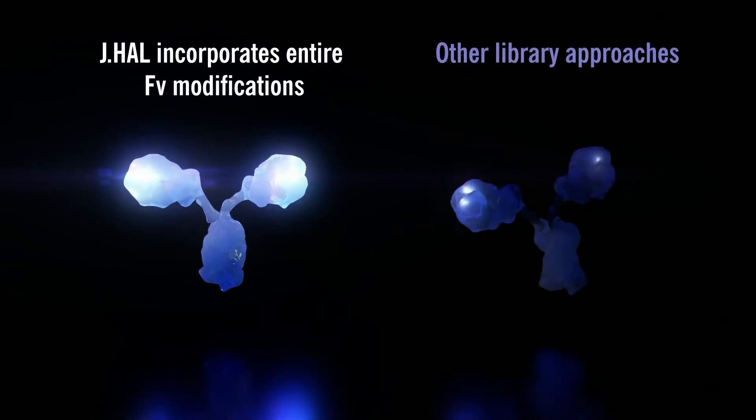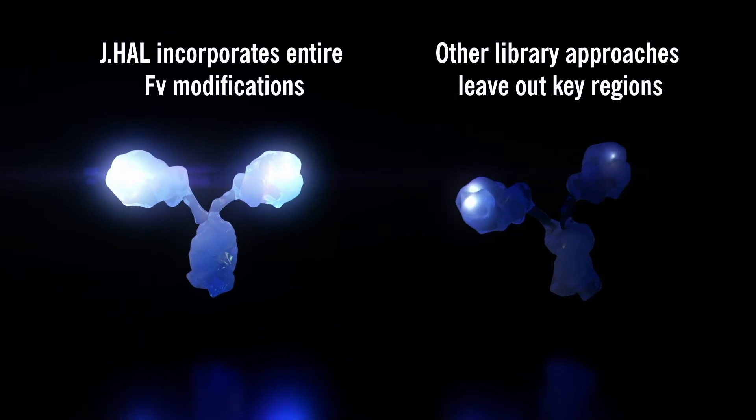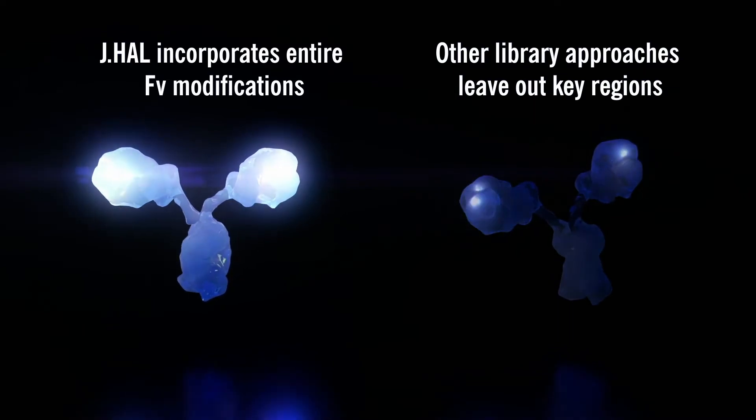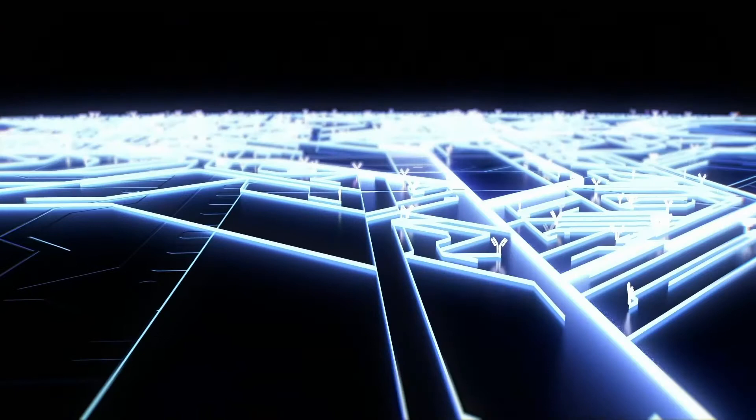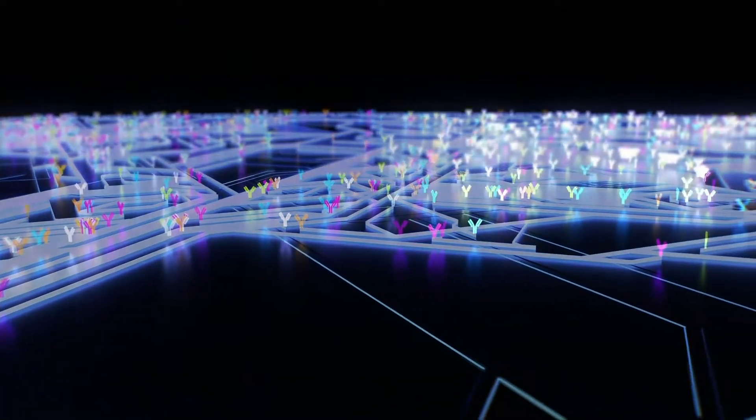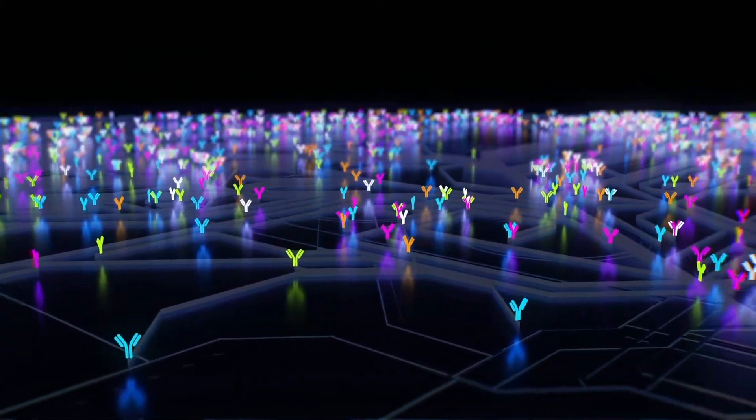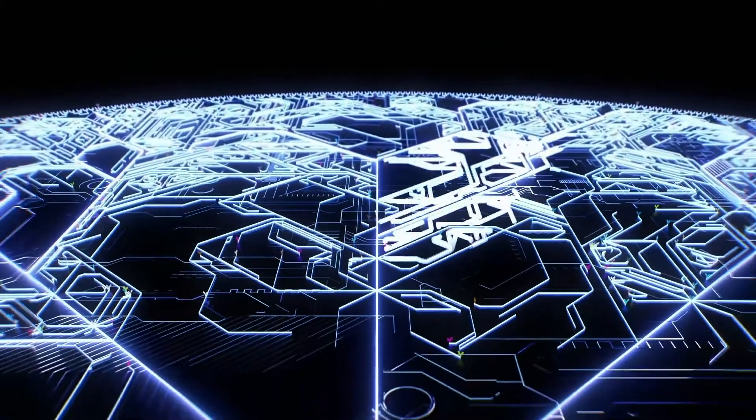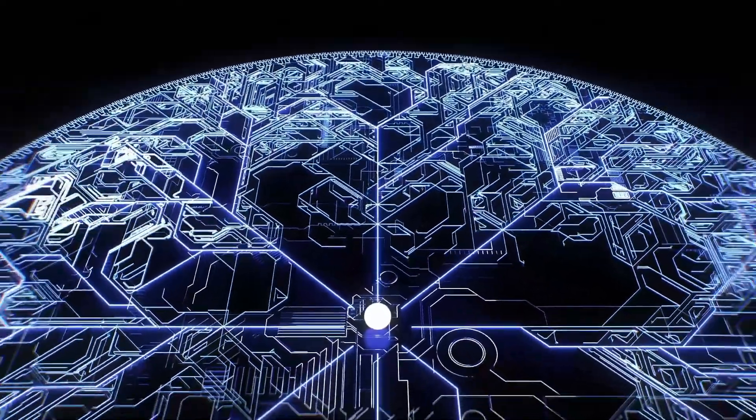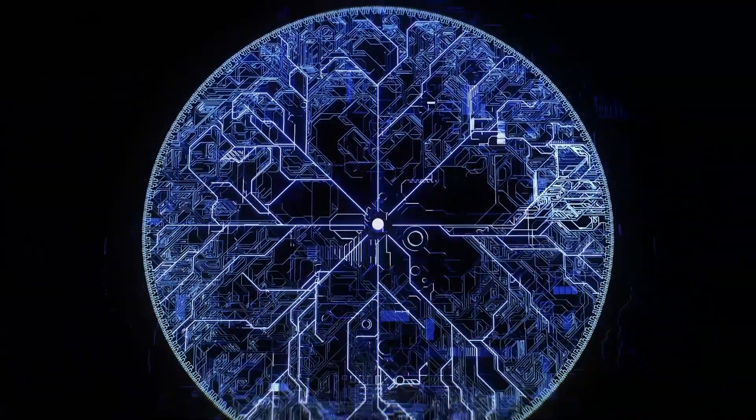Other library approaches focus on CDR diversity, leaving out key regions which contribute to an antibody's efficacy and manufacturability. JHAL contains billions of unique antibodies with diverse efficacy and developability designed into them, ranging from commonly found antibody motifs to entire libraries of rare features of the human repertoire that would be difficult to find in a traditional discovery platform.